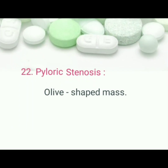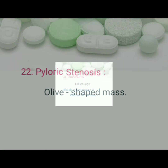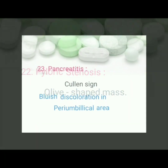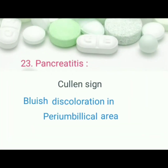Pyloric stenosis: pathognomonic sign is olive-shaped mass. Pancreatitis: pathognomonic sign is Cullen's sign, bluish discoloration in the peri-umbilical area.